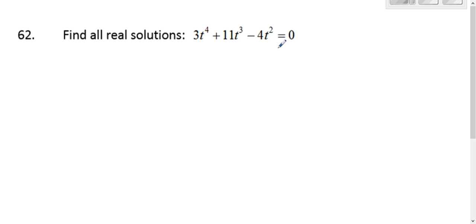All right, so we've got to factor. We're going to start by factoring out the common factor, which is t squared. Take out a t squared. You're left with 3t squared plus 11t minus 4.